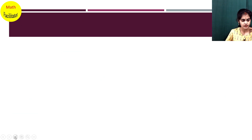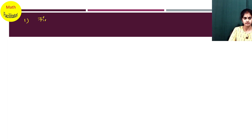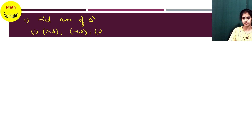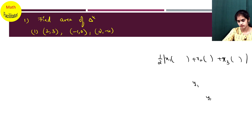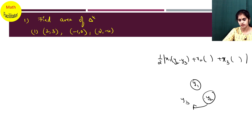Based on this formula, let's find the area of the triangle. The first question: find the area of a triangle with coordinates (2, 3), (-1, 0), and (2, -4). So area of triangle equals half modulus of x1 into (y2 minus y3) plus x2 into (y3 minus y1) plus x3 into (y1 minus y2). Taking x1=2, y2=0, y3=-4 for the first term, and x2=-1, y3=-4, y1=3 for the second term.